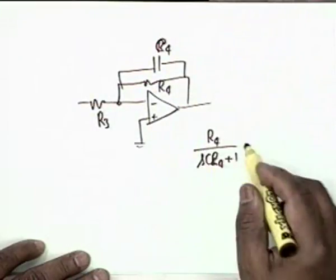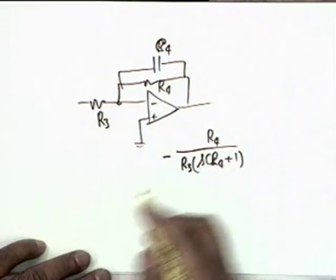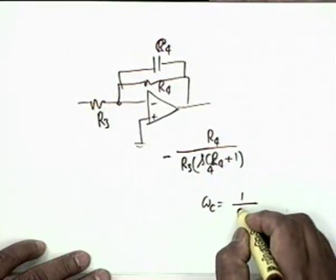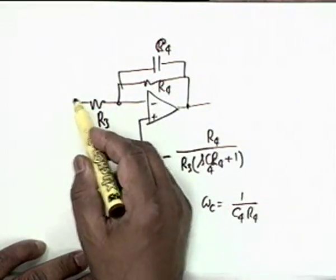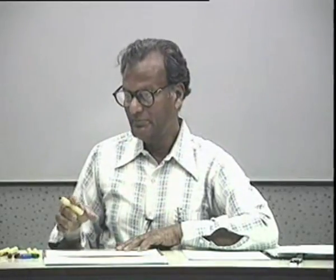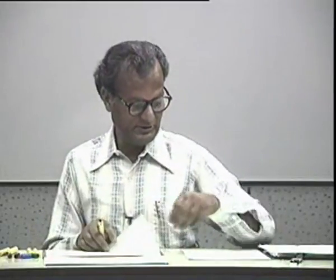For better harmonic rejection, use a second-order filter or even a higher-order filter if you are very particular about the distortion content of the waveform.